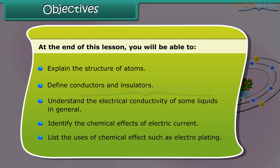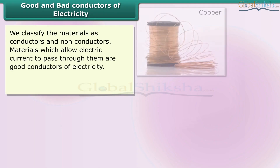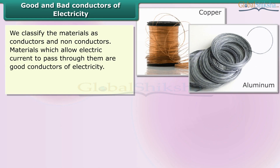We classify materials as conductors and non-conductors. Materials which allow electric current to pass through them are good conductors of electricity. We also list the uses of chemical effects such as electroplating.